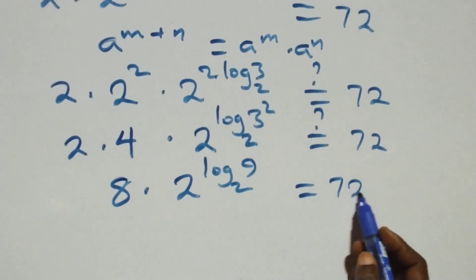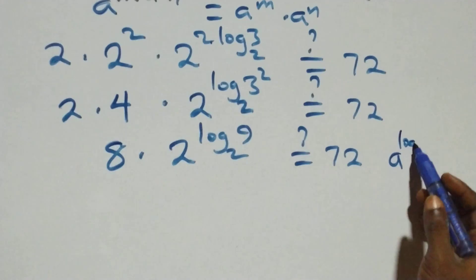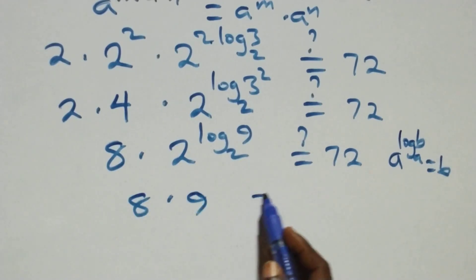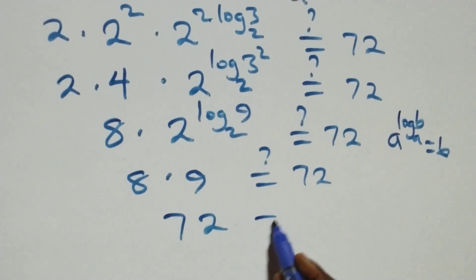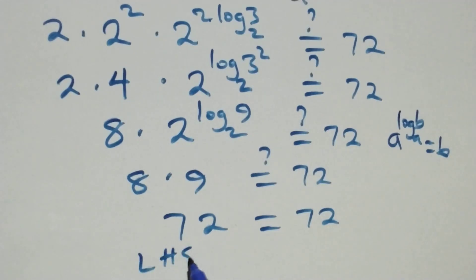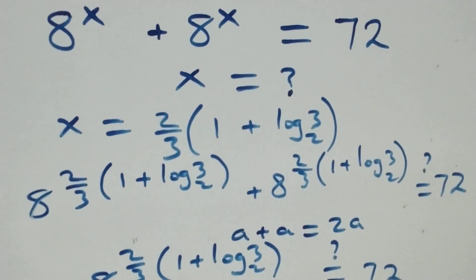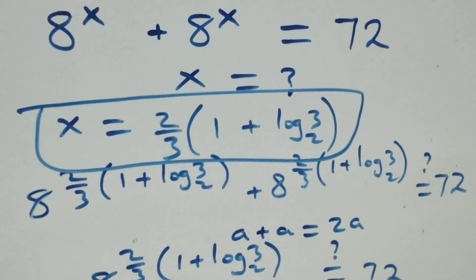We have 8 times 9 equals 72. Of course, 8 times 9 gives us 72, which equals 72. The left-hand side equals the right-hand side. Therefore we conclude that x equals 2 over 3 into bracket one plus log 3 base 2 satisfies this given problem. Thank you for watching — don't forget to subscribe for more videos, turn on the notification bell, share this video, give a thumbs up, and put your comment. See you next class.